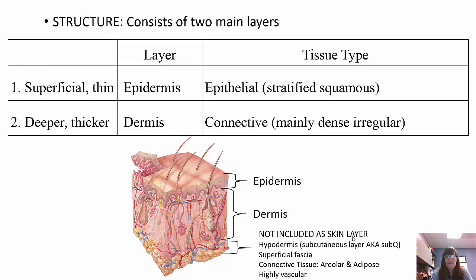The subcutaneous layer consists of areolar and adipose tissue. It's highly vascular, and it cushions and insulates our body.